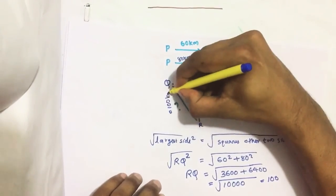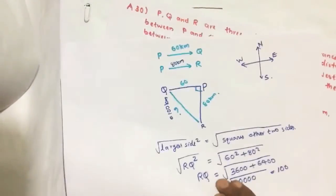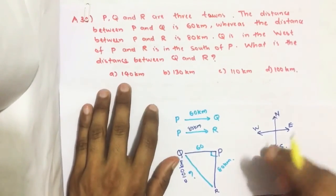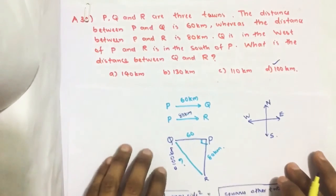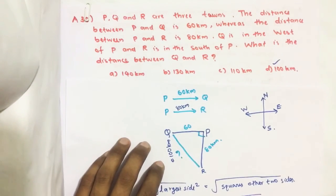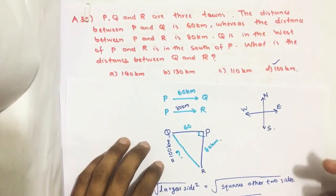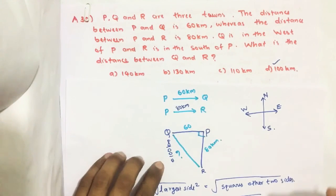So the distance RQ equals 100 kilometers. This is our required answer. Option D is the answer. If you have any suggestions please do comment, and please don't forget to like, share, and subscribe to our channel. Keep supporting and loving us. Jai Hind, thank you.